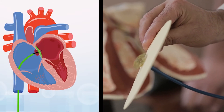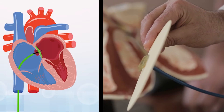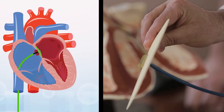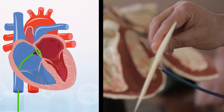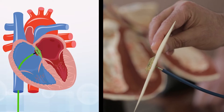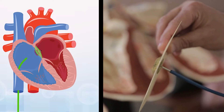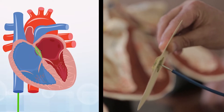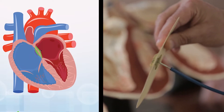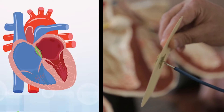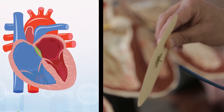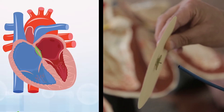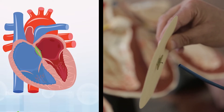We pulled the whole system and delivered the second arm of the device. Now the hole is sandwiched in between the two. It's still attached to the special wire. When we confirm the position of the device, we release it and then the device will stick to the hole in between the upper chambers of the heart.